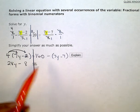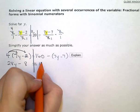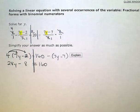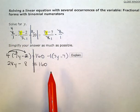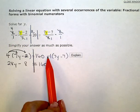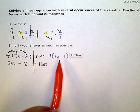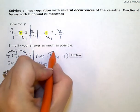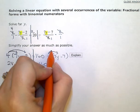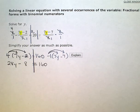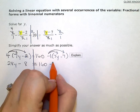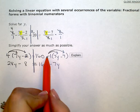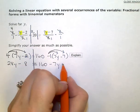Now, on the right side, I have 160. And remember, there's an implied or a hidden 1 right there. This subtract and then this expression inside the parentheses really means to multiply or distribute a negative 1 over both those terms. Negative 1 times 7y is minus 7y. Negative 1 times negative 7 is positive 7.